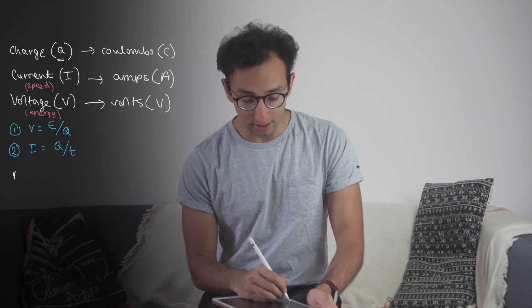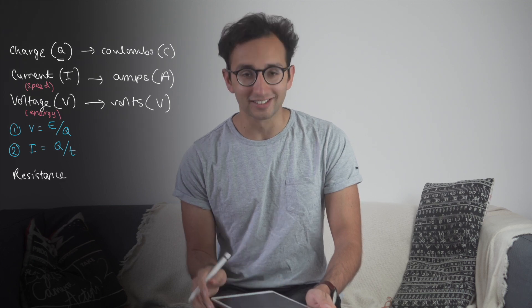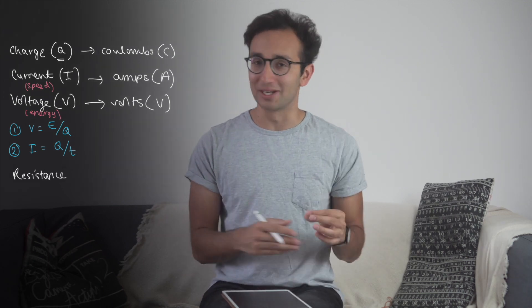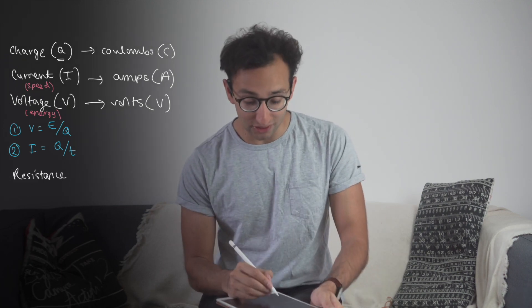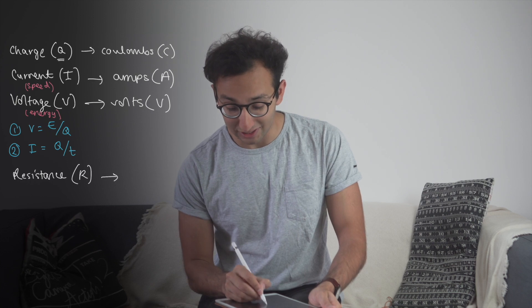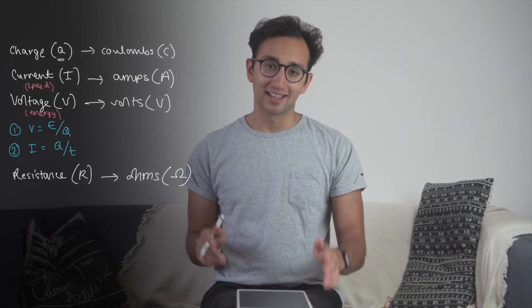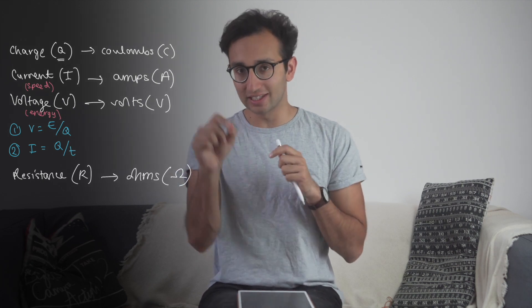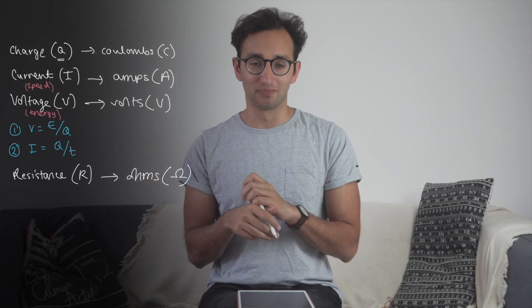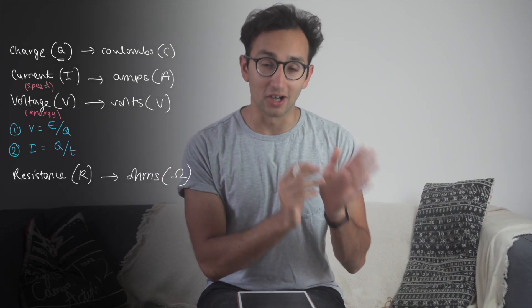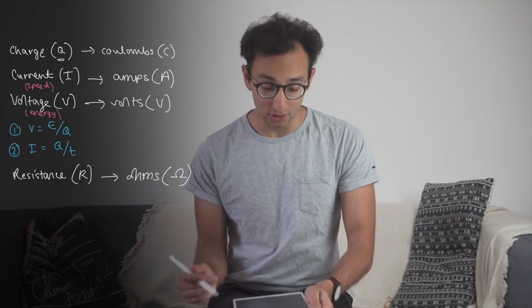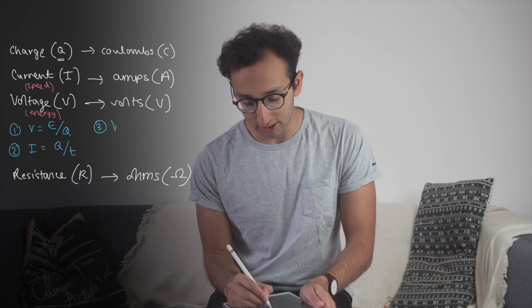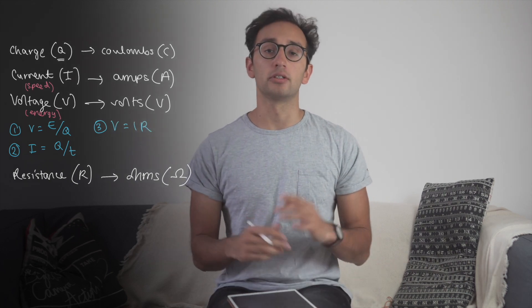The next thing to define is resistance. It's the resistance to the push of electrons — a high resistance means it's harder for electrons to get through. Resistance is given the symbol R, measured in ohms. You will always see R in a formula, never the omega symbol for ohms. This brings us to formula three — Ohm's law, probably the most famous formula in electricity: V = IR, voltage equals current times resistance.